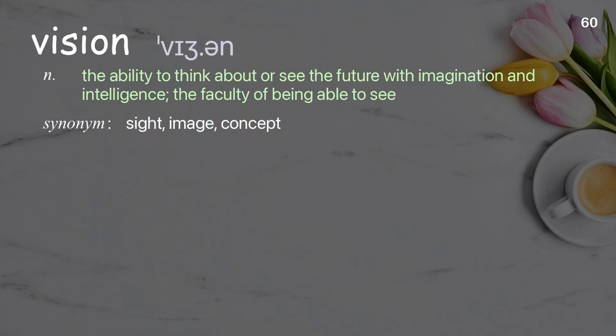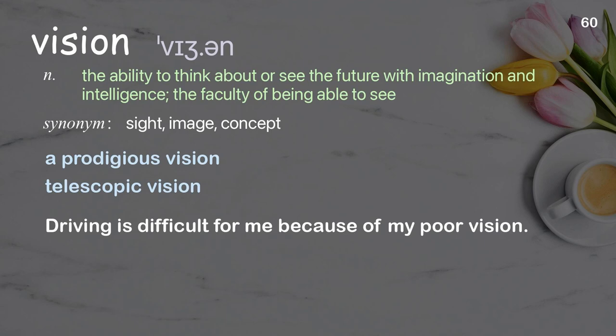Vision: the ability to think about or see the future with imagination and intelligence; the faculty of being able to see. Examples: a prodigious vision, telescopic vision. Driving is difficult for me because of my poor vision.